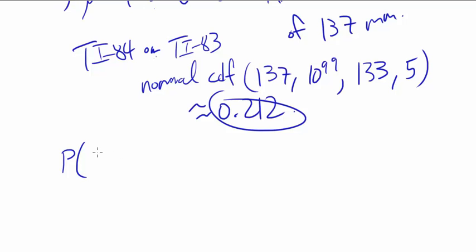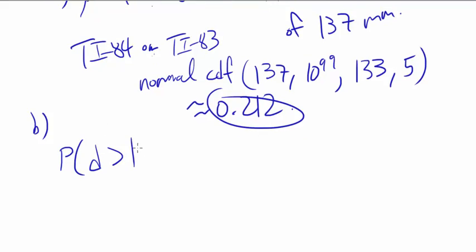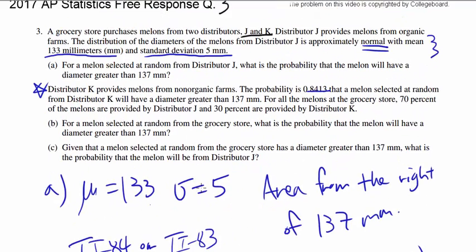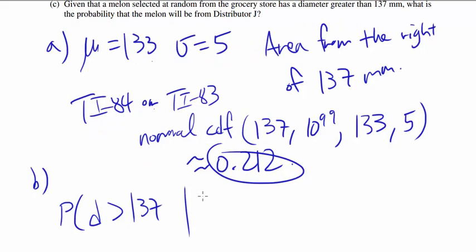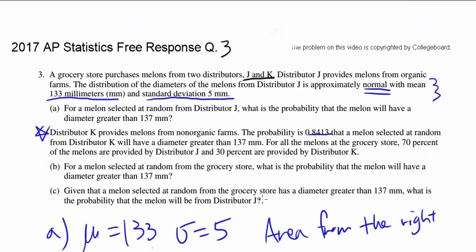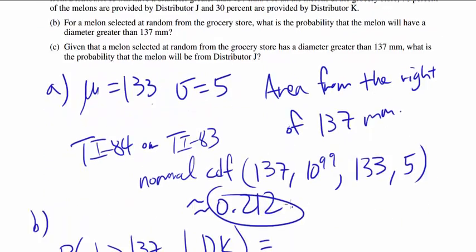Probability of diameter, let's call that D, more than 137, given that it's distributor K, is 0.8413.